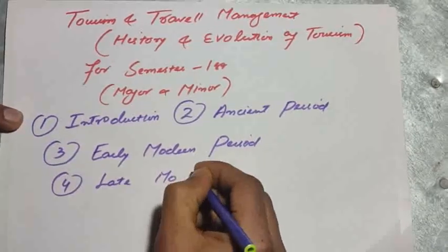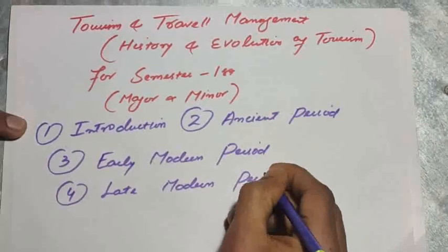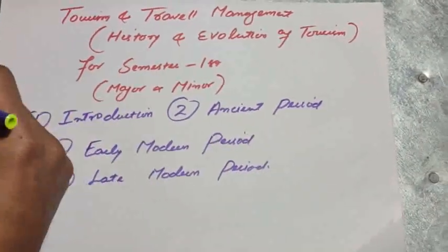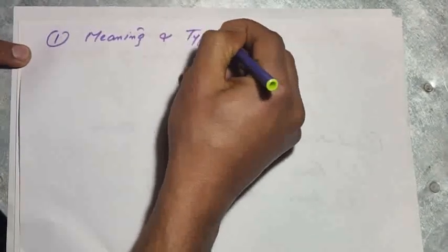So there are most important questions which I will describe here. Let's start. What are the important questions in this paper? First question is Meaning and Types of Tourism.